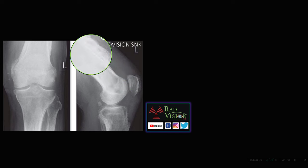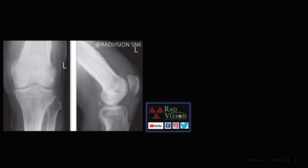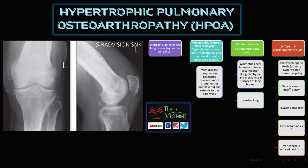Next case: a known case of primary lung cancer presenting with pain in the femur. There is diffuse bilateral periosteal thickening in the metadiaphyseal region of the femur. Whenever a patient with a history of lung cancer shows these features, definitely suspect hypertrophic pulmonary osteoarthropathy. This can present as periosteal thickening or periostitis. On nuclear medicine, there is increased linear tracer uptake presenting as a tram-track sign. Other differentials include pachydermoperiostosis, chronic venous insufficiency, thyroid acropachy, hypervitaminosis A, and voriconazole-induced periostitis.